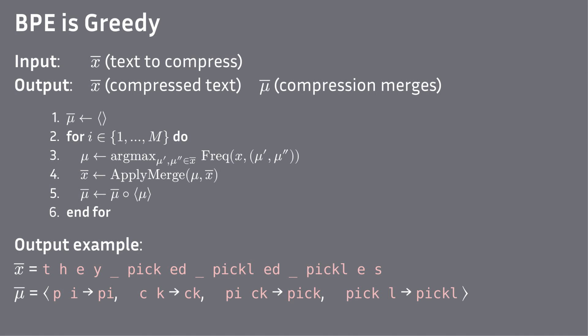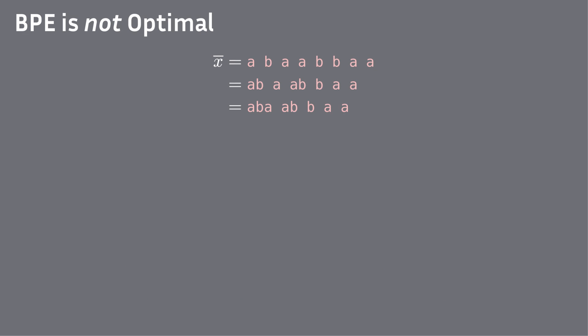This is how the output might look: tokenized text and the sequence of merges that caused it. It should be clear what it means that BPE is greedy — at each time step, we look at what the currently most frequent pair is and we take that one. Now that we know it is greedy, we'll also show that it's not optimal in its greediness.